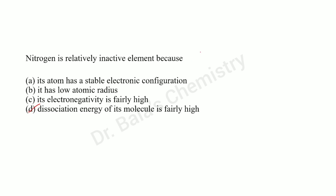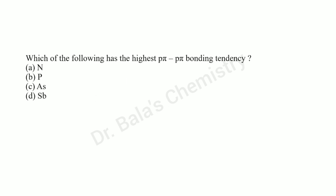D is the right answer. Which of the following has the highest pπ-pπ bonding? Nitrogen is the right answer, because the nitrogen triple bond is needed — nitrogen forms pπ-pπ bonds.